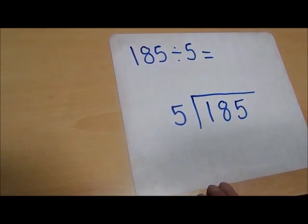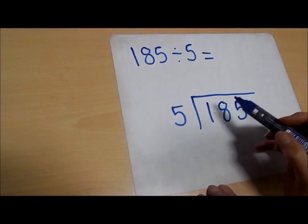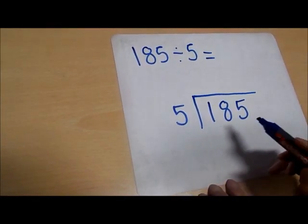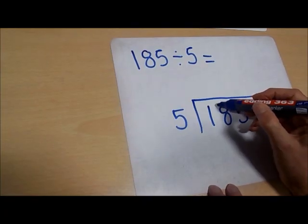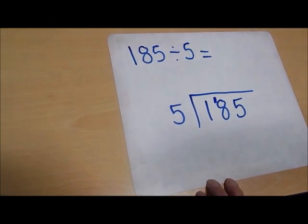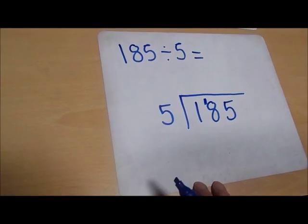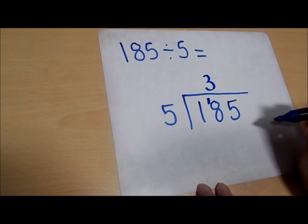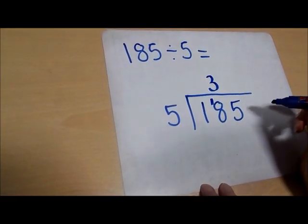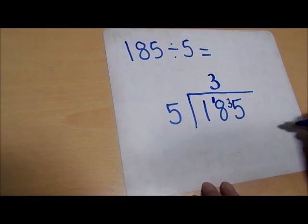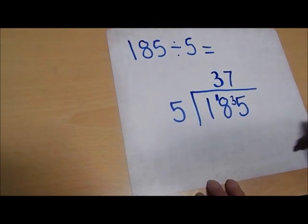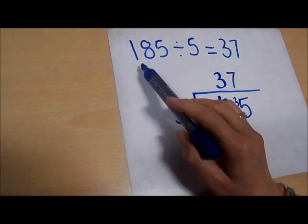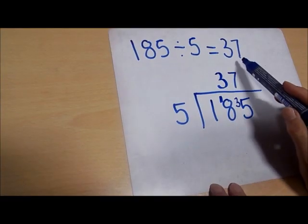Just like we did before, we say to ourselves: how many fives are there in one? Well, this time there aren't any — we can't make any groups of five from one. So we need to carry it over into this column. So now we have 18. How many fives are there in 18? There are three fives that make 15 and the remainder is three. How many fives are there in 35? There are seven fives in 35. So the answer to our calculation, 185 divided by five, equals 37.